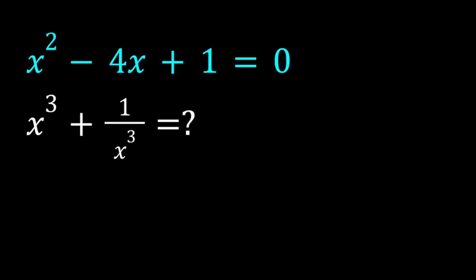Hello everyone. In this video, we're going to be dealing with a polynomial equation. We have x squared minus 4x plus 1 equals 0, and we're going to evaluate x cubed plus 1 over x cubed. I'll be presenting three methods. Let's start with the first one.